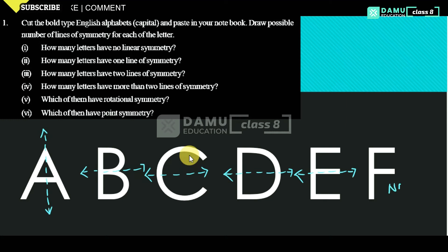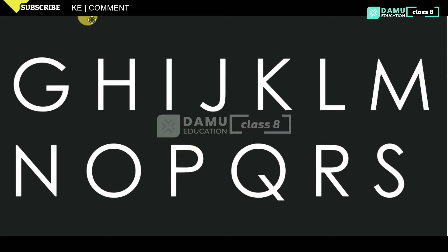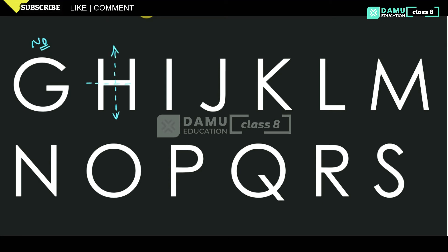For F, there is no line of symmetry. For G, how many lines of symmetry? Also no line of symmetry — there is no horizontal, there is no vertical. For H, you can divide it vertically and also horizontally. For I also, we can get vertical and horizontal lines. For J, there is no line of symmetry. For K, yes — one line of symmetry. For L, there is no line of symmetry.